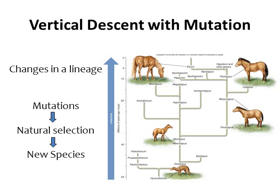This vertical descent happens through time — you first have to have mutations in the population. Those mutations help the organism survive in their environment, either help them find food or help them survive. If you're more likely to survive, you're more likely to reproduce and produce offspring. So we have this natural selection, where organisms better able to survive are better able to reproduce and pass on their genes. Eventually, if a population adapts to a certain environment and separates from another population, you can end up with two different species.